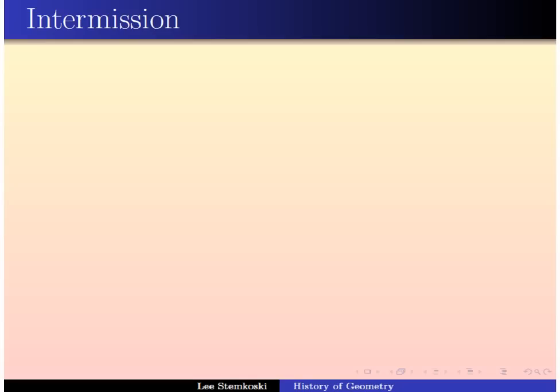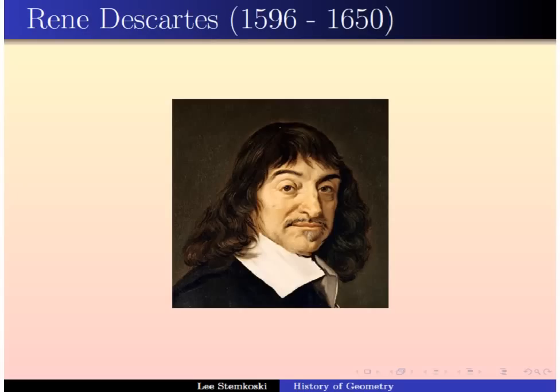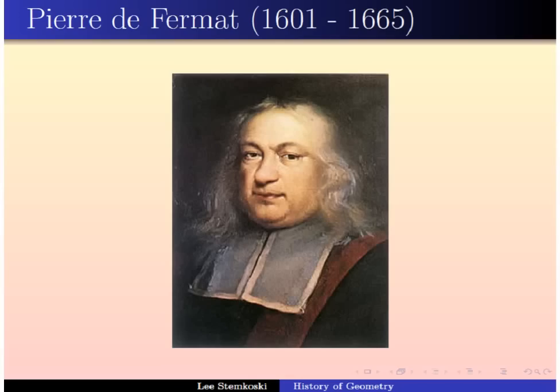That brings us back to the history of modern geometry. One of the first new and important directions that geometry took was the creation of analytic geometry. It was discovered and created at roughly the same time by two different individuals: René Descartes and Pierre de Fermat. They introduced coordinate systems assigning pairs of numbers to give the position of points in the plane, and the use of equations in geometry. This was very important not only for its own sake, but as an important precursor to the development of the calculus.